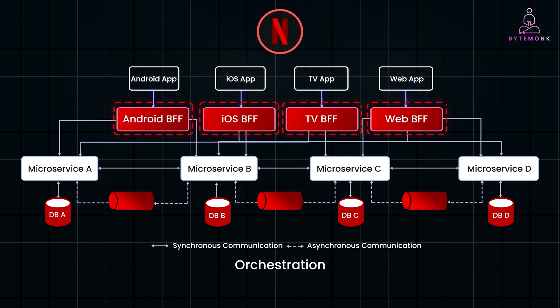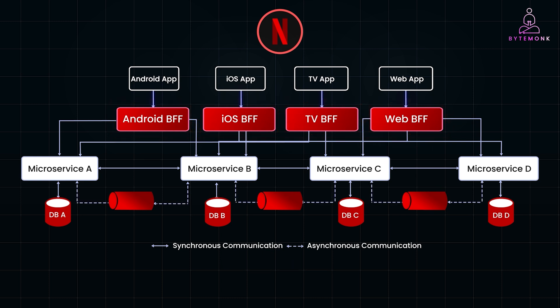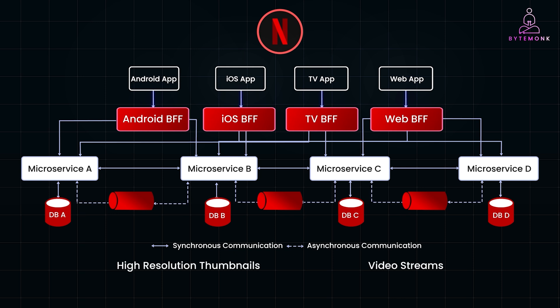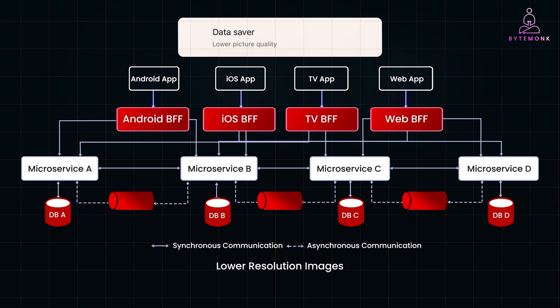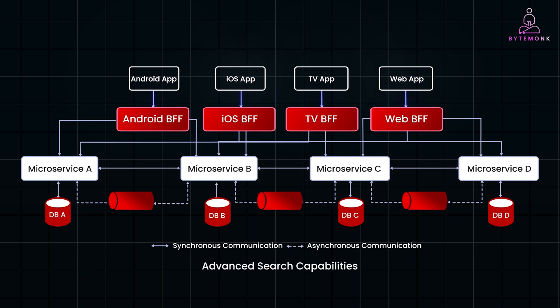Each BFF is responsible for orchestrating the communication between the client and the core backend services. It aggregates data from multiple microservices, formats it appropriately, and delivers it to the client in the most efficient way possible. Because each BFF is tailored to its specific client, it can implement unique features and optimizations. For example, the TV app might need to retrieve high-resolution thumbnails and video streams along with a grid of content categories, while the mobile app might prioritize showing the latest episodes with lower resolution images to save on data, and the web app could offer more detailed filtering options, advanced search capabilities, and richer metadata.